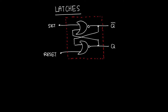It's pretty simple, but it's their configuration that's interesting. I have two outputs: Q and Q-bar. What SET does is make Q high, and what RESET does is make Q low. The Q-bar output is always going to be the opposite of Q. Before going forward, let's briefly review the operation of a NOR gate, which outputs a high only when both its inputs are zero.